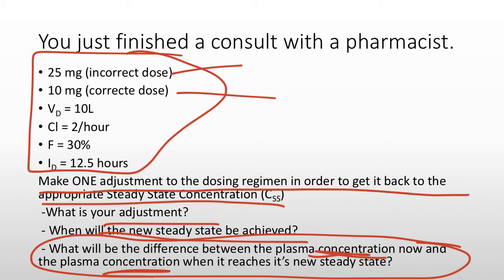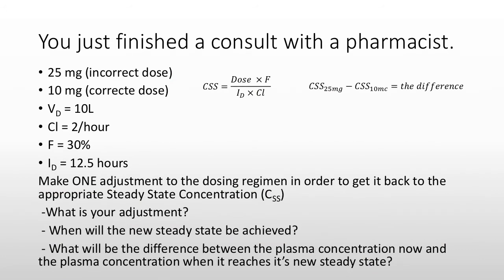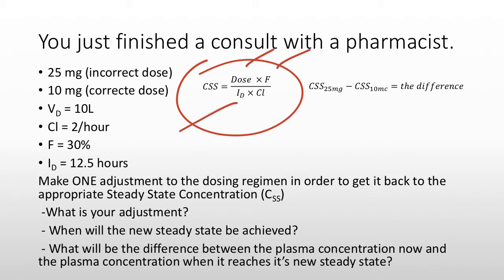Some of this you should already be able to calculate. The concentration steady state equals the dose times the bioavailable fraction divided by the dosing interval — these three variables are sometimes combined into a dosing rate — and then divided by the clearance.